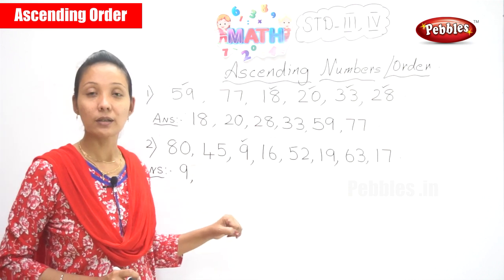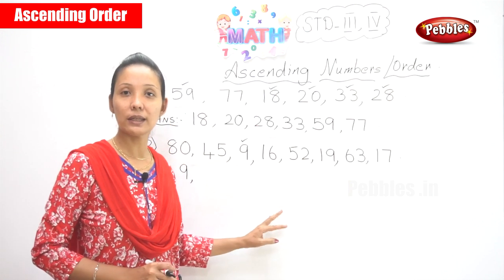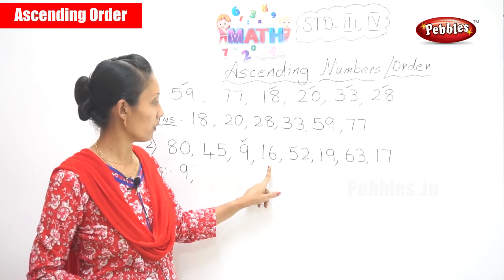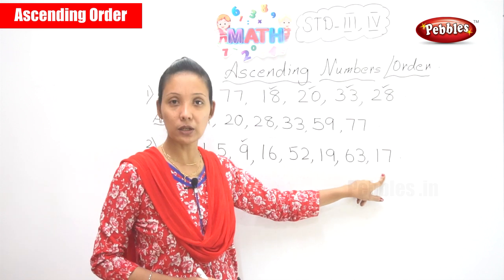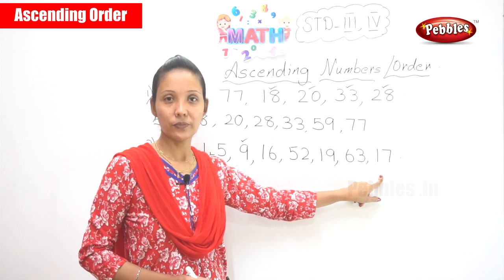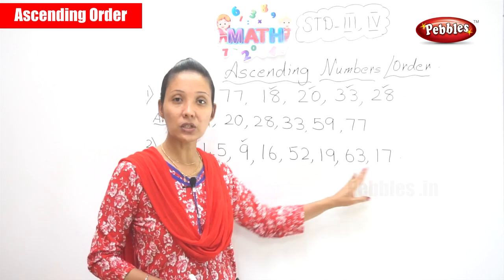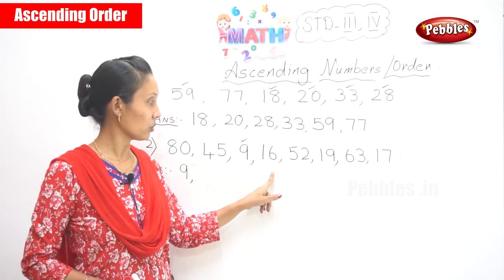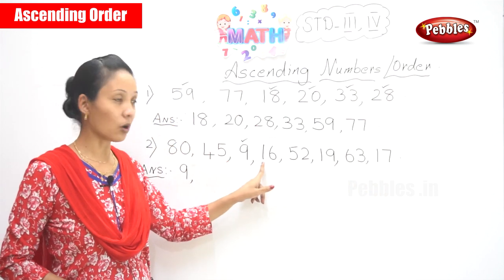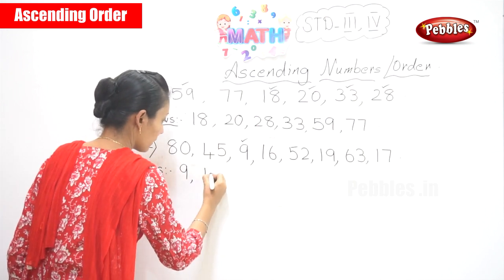Now what is the next smallest number? Numbers beginning with 1: 16, 19, and 17. In these 3 numbers, which is the smallest? The second digit — 16, 19, 17. The smallest number is 16. So after 9, it is 16.